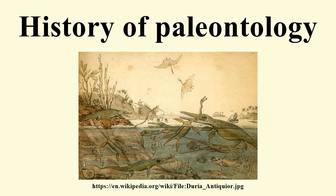As early as the 6th century BC, the Greek philosopher Xenophanes of Colophon recognized that some fossil shells were remains of shellfish, which he used to argue that what was at the time dry land was once under the sea. Leonardo da Vinci, in an unpublished notebook, also concluded that some fossil sea shells were the remains of shellfish. However, in both cases, the fossils were complete remains of shellfish species that closely resembled living species, and were therefore easy to classify.